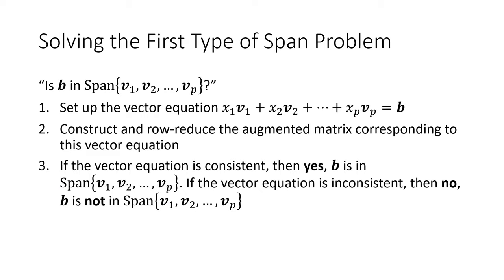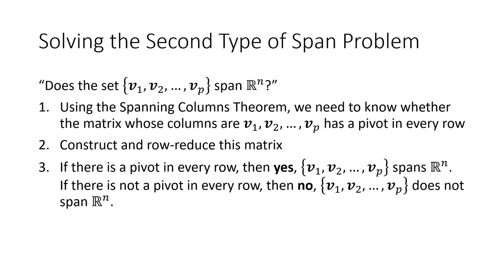To summarize: for the first type of problem, you have a specific vector b. Set up the vector equation x1*v1 + x2*v2 + ... + xp*vp = b, construct the augmented matrix, and row reduce. If there's no pivot in the last column, the equation is consistent — b is in the span. If there is a pivot in the last column, the equation is inconsistent — b is not in the span. For the second type, use the spanning columns theorem. Build the matrix with v1 through vp as columns and row reduce. If there's a pivot in every row, the vectors span R^n; if not, they do not.